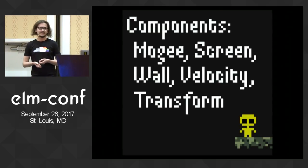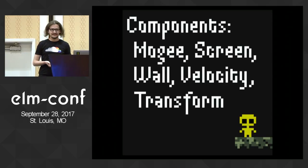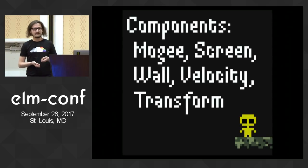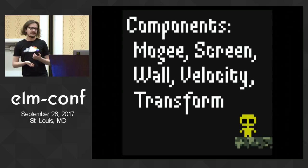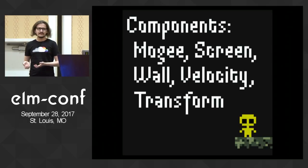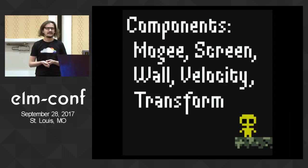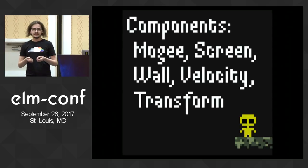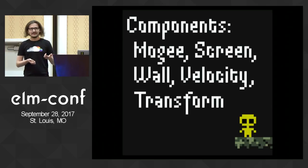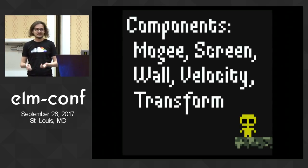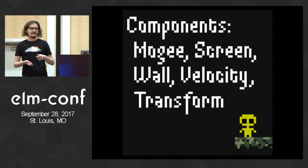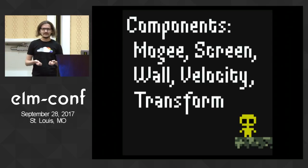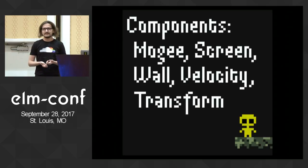These are the components in the game, and some of them are named after corresponding entities because they store entity-specific information. The way I defined the Moji entity is by creating a Moji component, a velocity component, and a transform component. With this approach, whenever I need to calculate screen offset, I can look into the dictionary that stores Moji and get the Moji ID. Then using that ID, I do a lookup in the transform component to get the position — so I don't have to loop over all the entities in the game.